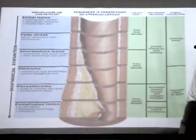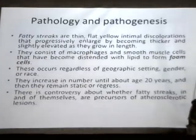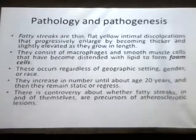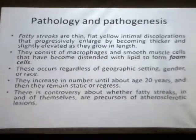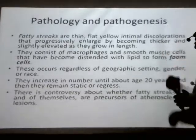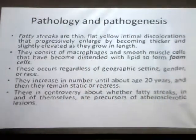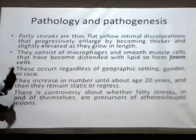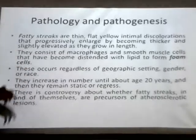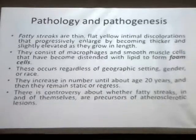The fatty streak is actually the deposition of certain fats at the initial lesion formed in the first decade of life. These fatty streaks are thin, flat, yellow intimal discolorations that progressively enlarge to become thicker and slightly elevated as they grow. They are initial lesions — you can imagine a streak present on the intimal layer — and later when they develop they will become thicker and slightly elevated from the surface.